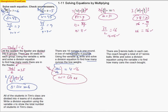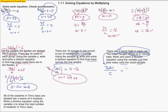Next problem: there are 3 tennis balls in each can and the total number is 27 tennis balls. We put the total on top. Using variable C for the number of cans, the equation is: 27 over C equals 3, because the total divided by the number of cans equals the number of balls per can.